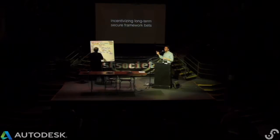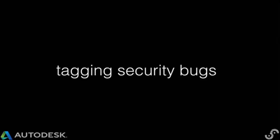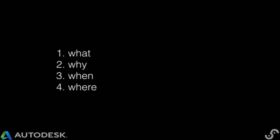The other part of my abstract was about incentivizing long-term secure framework bets. Whenever you have a security bug come in — whether an architectural flaw or anything like that — you should ask four questions: what happened, why did it happen, what failing led to this issue, when in the development lifecycle did it happen, and where — what code base or part of the environment. That should then inform you to work less on reactive stuff over time and more on proactive and mitigating work.